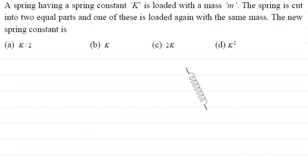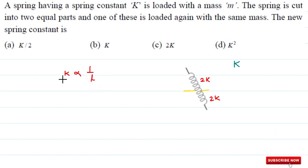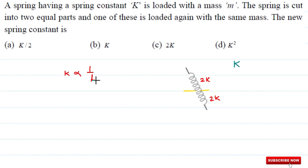The initial spring has force constant capital K. When divided into two equal halves, the force constant is proportional to 1 upon length. If the length is halved, the force constant doubles to 2k. So each half of the spring has spring constant 2k. When the spring is cut into two equal parts, each portion's spring constant becomes twice k.